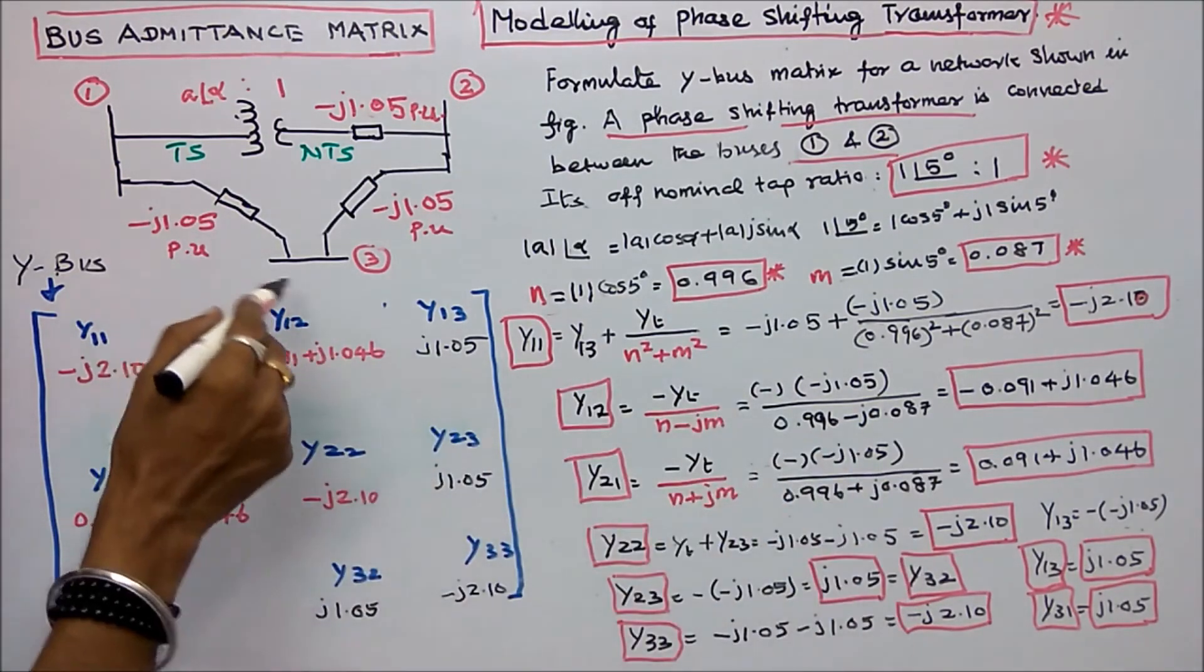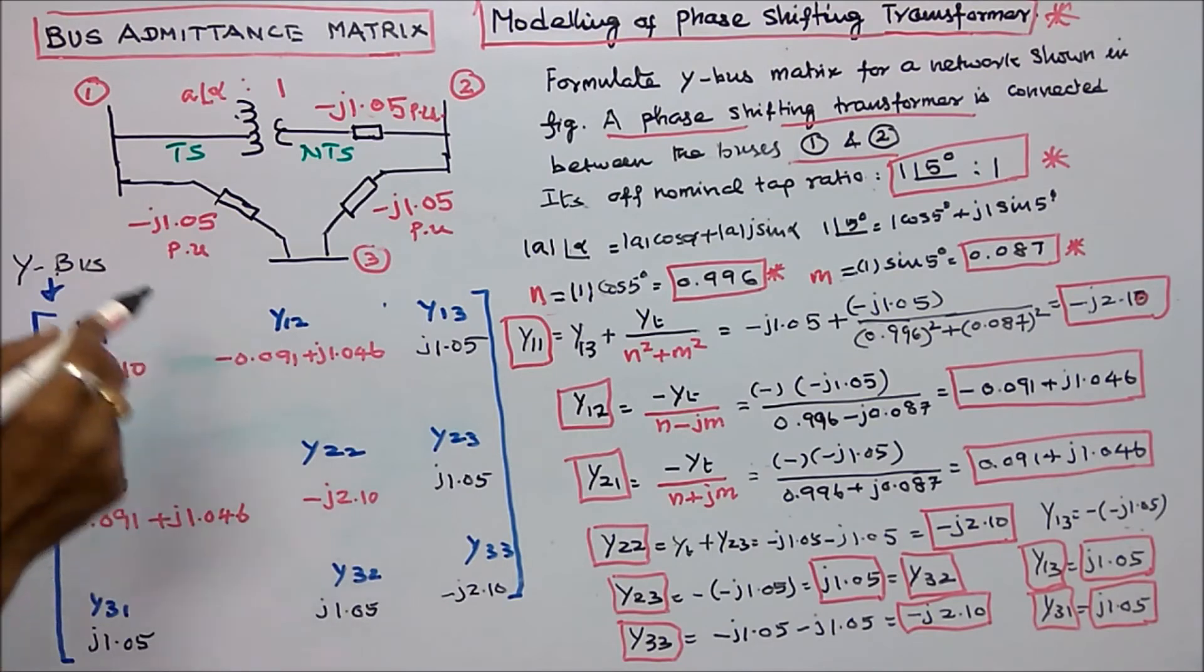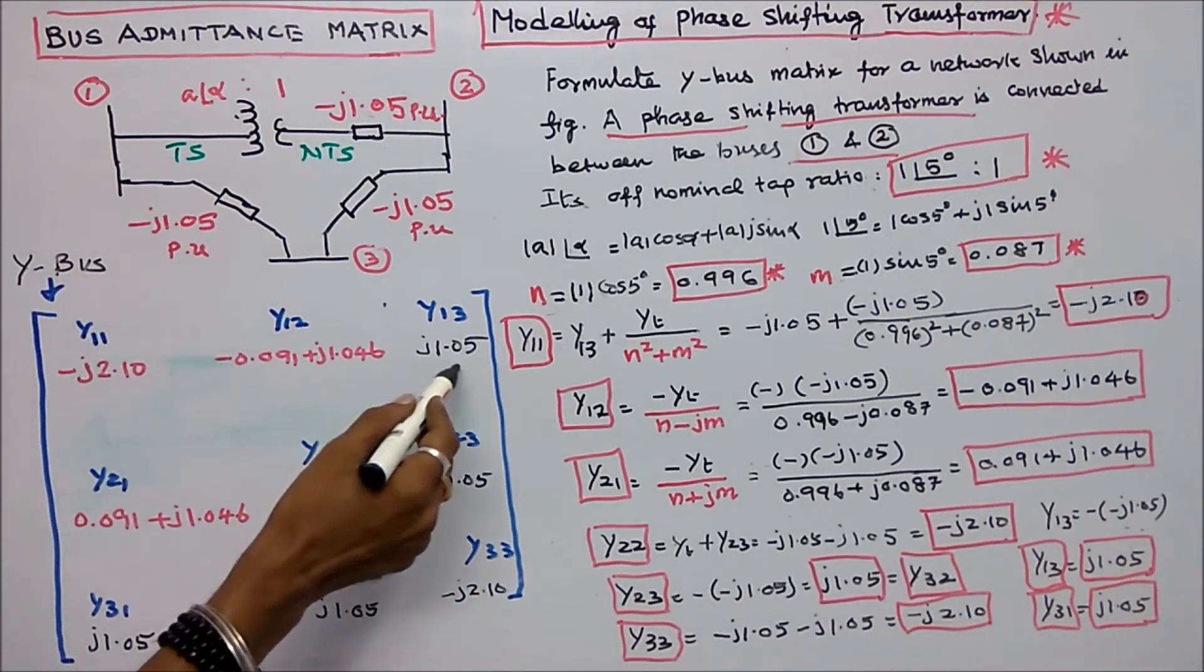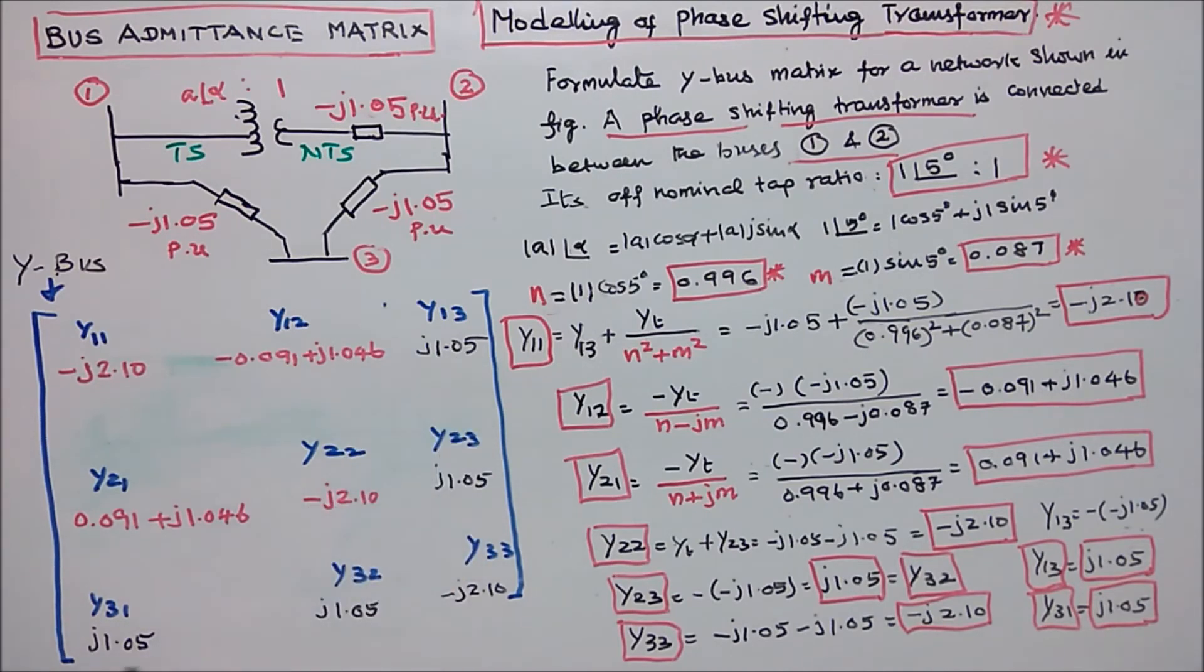y13. y13 is minus into minus j 1.05 plus j 1.05. y13 is equal to j 1.05. y31 is equal to j 1.05.